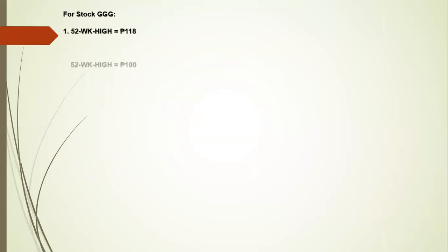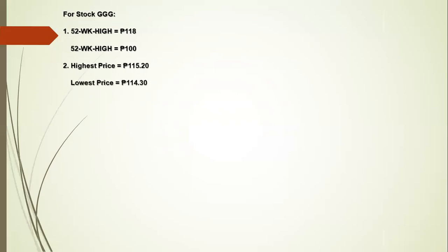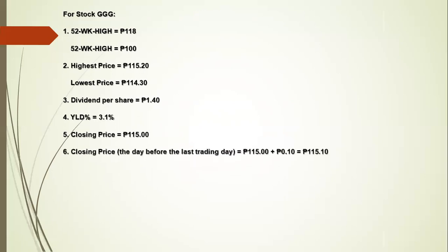For stock GGG — Number one: 52WK High = 118 pesos; 52WK Low = 100 pesos. Number two: Highest price = 115 pesos and 20 centavos; Lowest price = 114 pesos and 50 centavos. Number three: Dividend per share = 1 peso and 40 centavos. Number four: YLD percentage = 3.1%. Number five: Closing price = 115 pesos. Number six: Closing price the day before = 115 pesos plus 10 centavos = 115 pesos and 10 centavos.